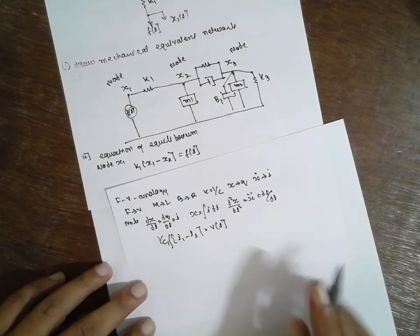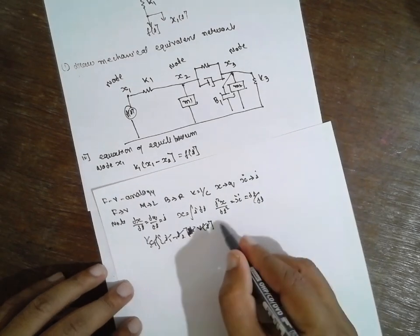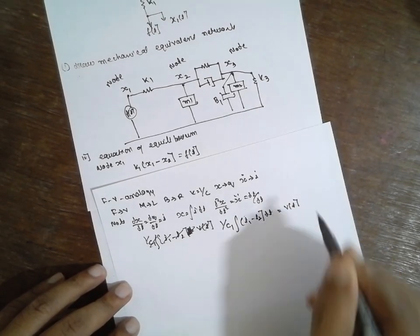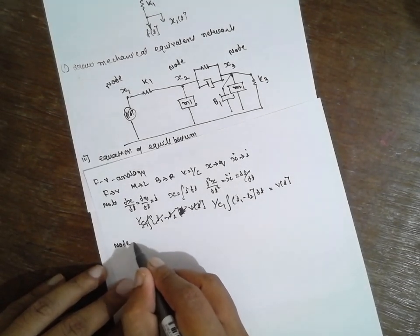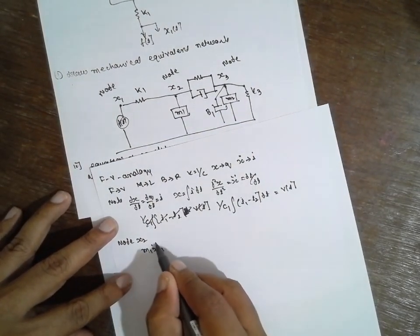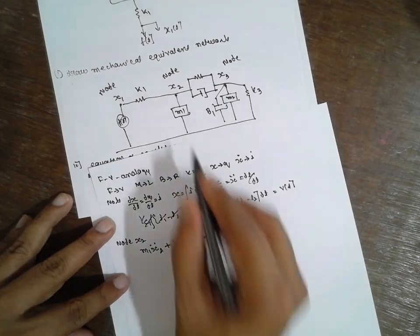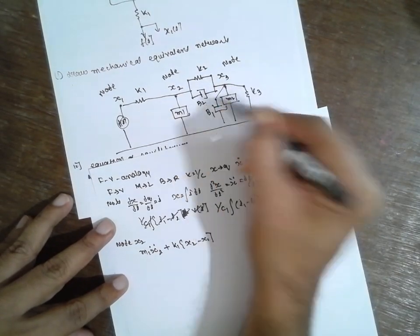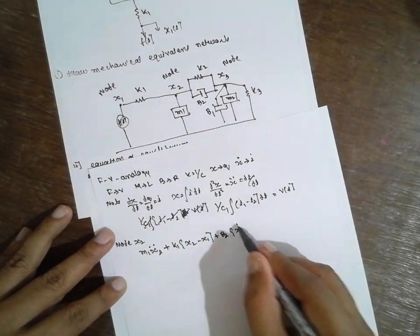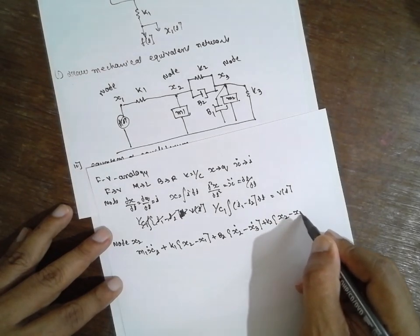Now I will consider node 2. For node 2, the equation is: M1 times x2 double dot, plus K1 times (x2 minus x1), plus B2 times (x2 dot minus x3 dot), plus K2 times (x2 minus x3) is equal to 0.